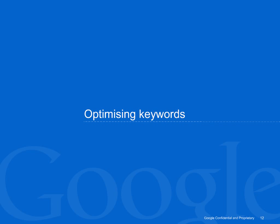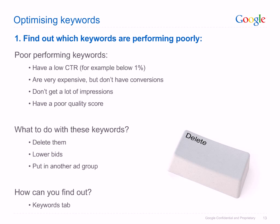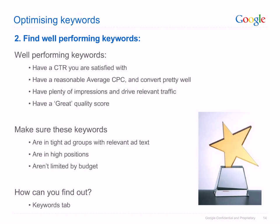We now move on to look at effective keyword lists. When optimising keywords, first filter which keywords are performing poorly. Check for those with a low CTR or a high cost with a low return. Keywords with low impressions and low quality score should be considered also. Removing low performing keywords is not the only option — lowering your bid and switching them to another, more relevant ad group may improve overall performance. Look at the Keywords tab on your campaigns page to see performance statistics and make changes. Identify well performing keywords using the same criteria from the opposite perspective. Invest in these keywords by ensuring that your bids are high enough, that they are in a tightly structured ad group, and do not have budget limitations which may cause your ad not to appear when there is potential for conversions. Once again, the Keywords tab is the place to go.